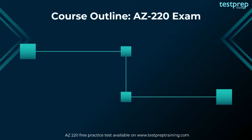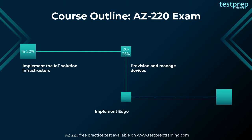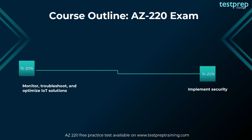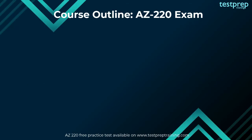Course outline — AZ-220 exam: the course outline comprises all the skills a candidate must possess, and you must be acquainted with all submodules of the domains. First, implement the IoT solution infrastructure (15–20% weightage); second, provision and manage devices (20–25% weightage); third, implement edge (15–20% weightage); fourth, process and manage data (15–20% weightage); fifth, monitor, troubleshoot, and optimize IoT solutions (15–20% weightage); sixth, implement security (15–20% weightage).